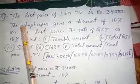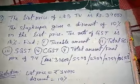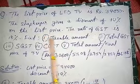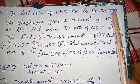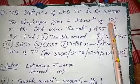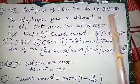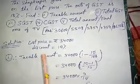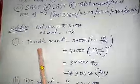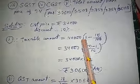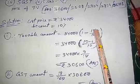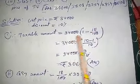Second question: the list price of an LED TV is Rs. 34,000. The shopkeeper gives a discount of 10% on the list price. That means 34,000 is the printed or list price, but he is not going to sell at that price — he will give a 10% discount. So the taxable amount will be calculated after the 10% discount. The formula is: taxable amount = 34,000 × (1 − 10/100).